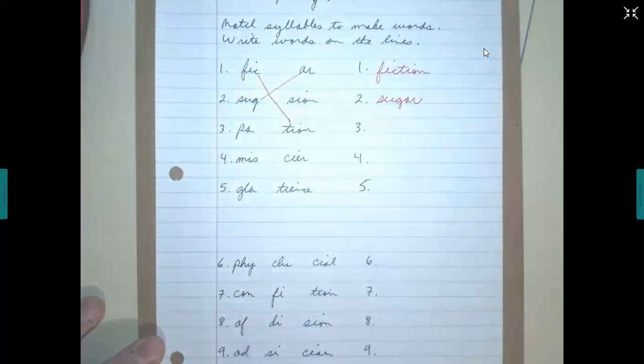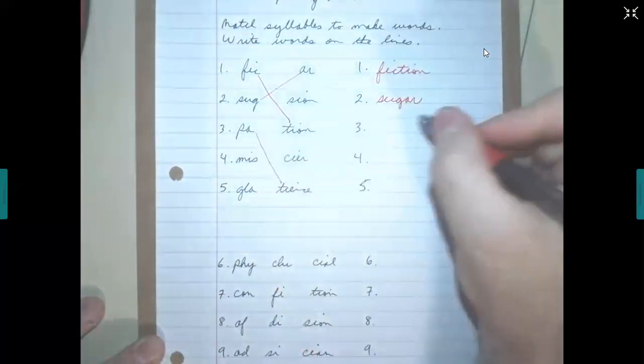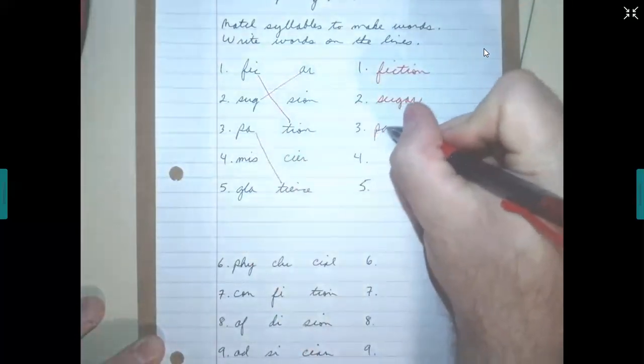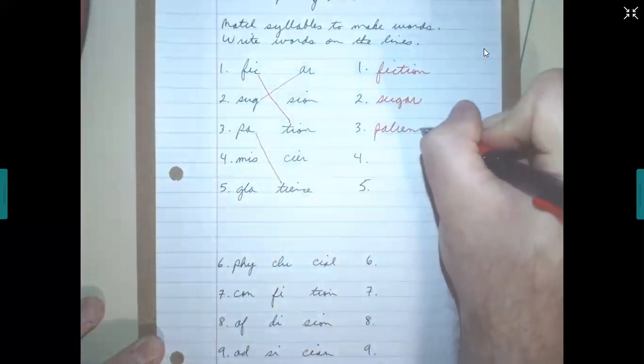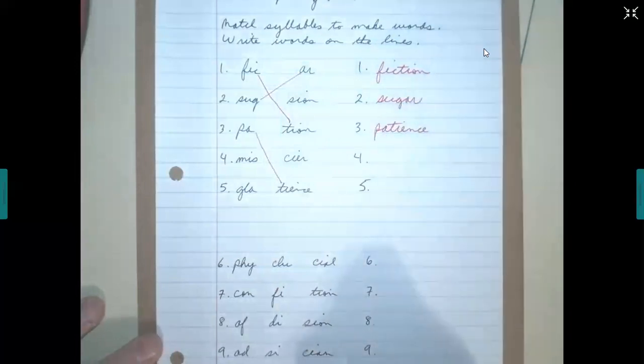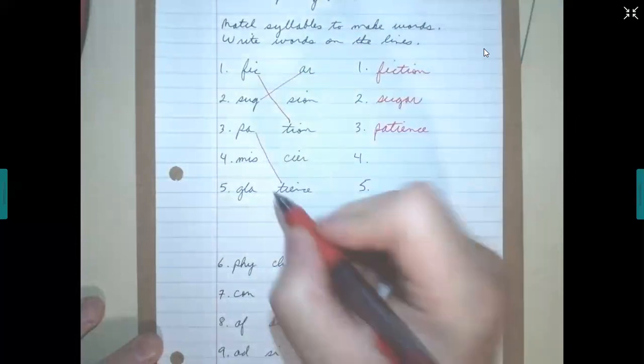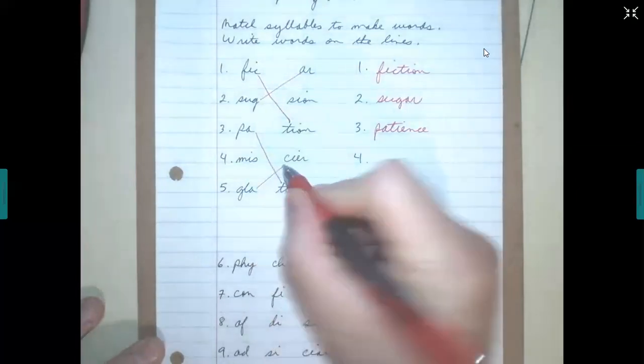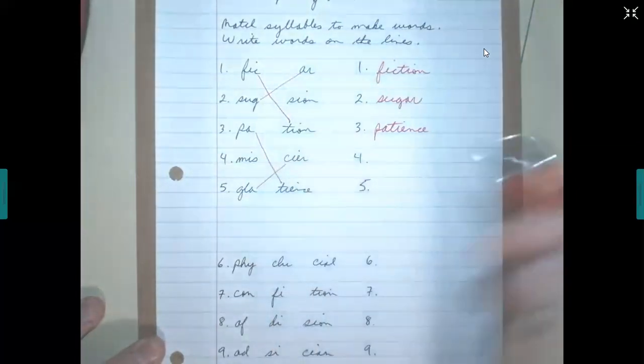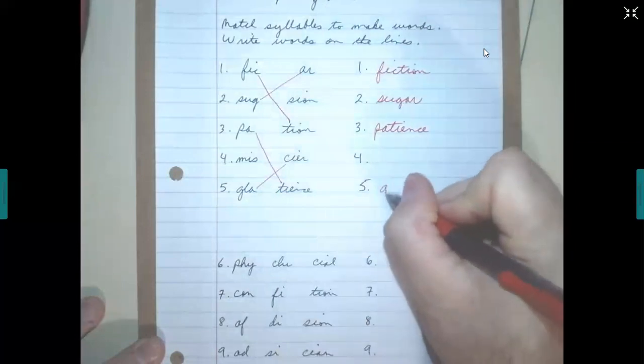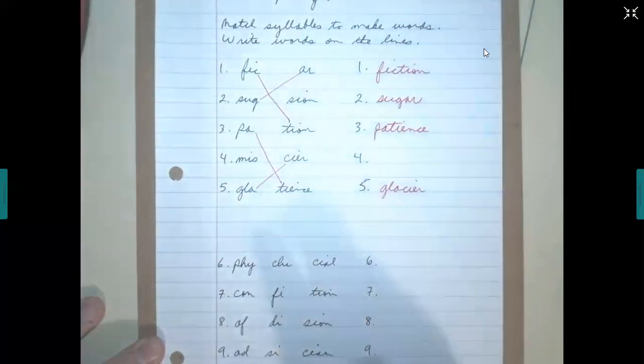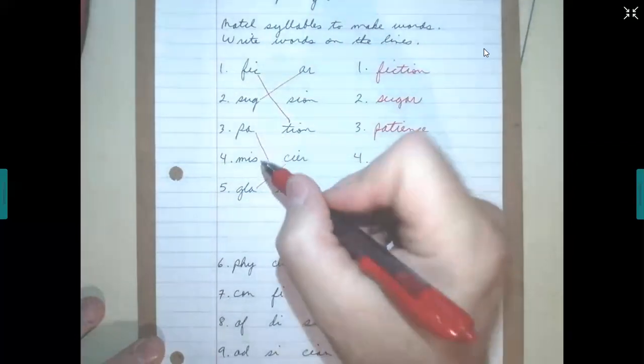Number three is P-A-Y, and we want to match that with S-H-I-N-S, patience. And then we have, for number five, G-L-A-Y, and we want to match that with S-H-I-R, glacier. I'm sorry, that's number five. Number four is M-I-S-S, so we want to match that with S-H-U-N, mission.